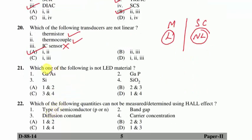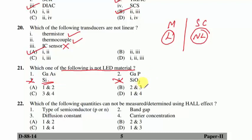Question 21: which is not an LED material? Silicon and silicon dioxide cannot be used as LED materials — silicon has four valence electrons, follows indirect bandgap, and silicon dioxide (thin oxide) is used as an insulator in IC fabrication. Suitable option C is correct.